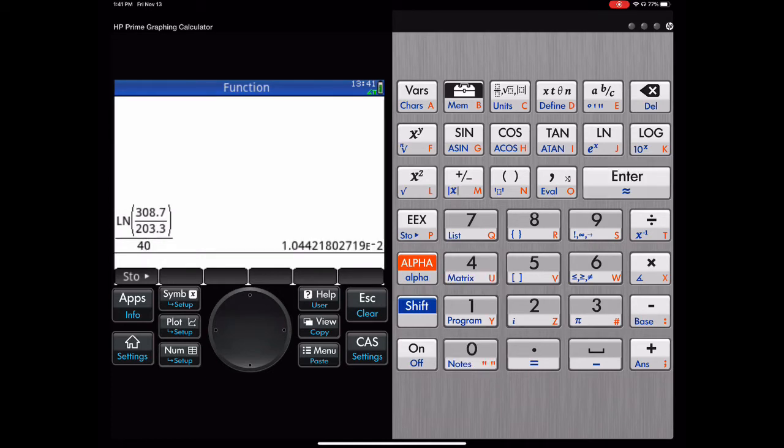And we're going to find that number. So fraction, and notice how I need a natural log with another fraction. And it was 308.7 divided by 203.3, and all that was divided by 40. So you get a pretty small number. Now what you're going to do is store it.